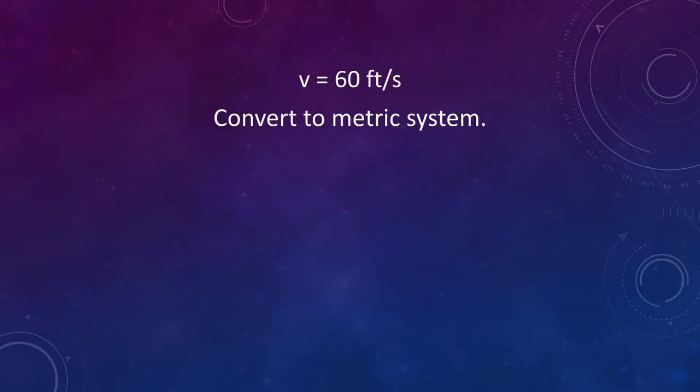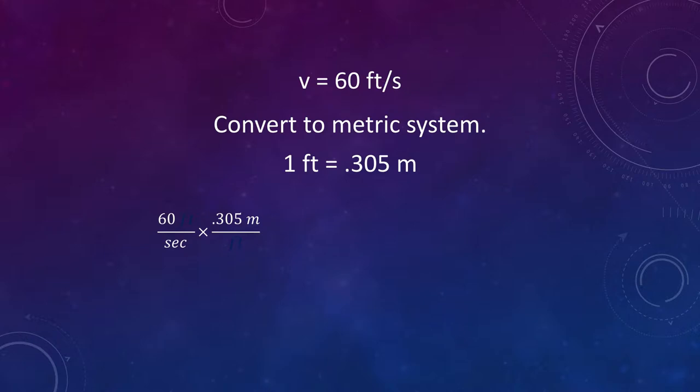Let's convert that to the metric system. 1 foot equals 0.305 meters, so 60 feet per second times 0.305 meters per foot, canceling out feet, gives us 60 times 0.305 meters per second, equals 18.3 meters per second.